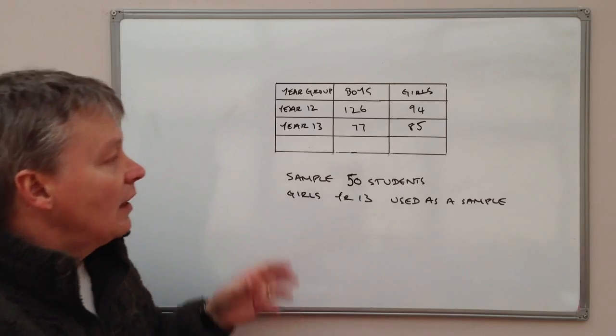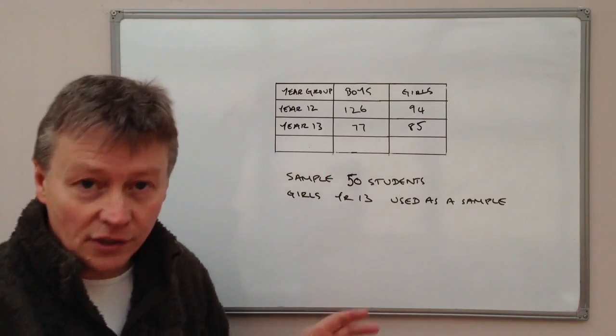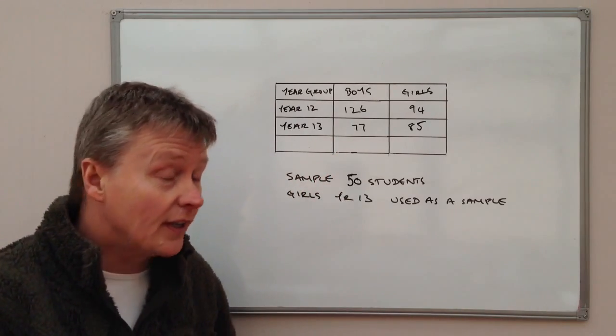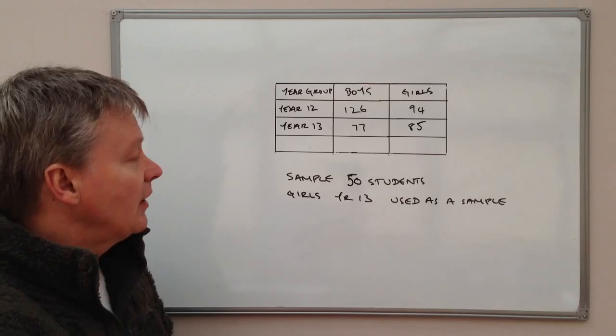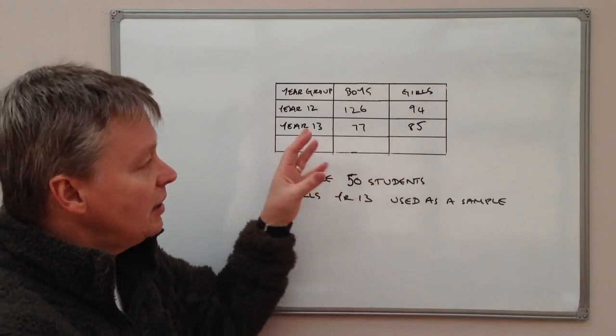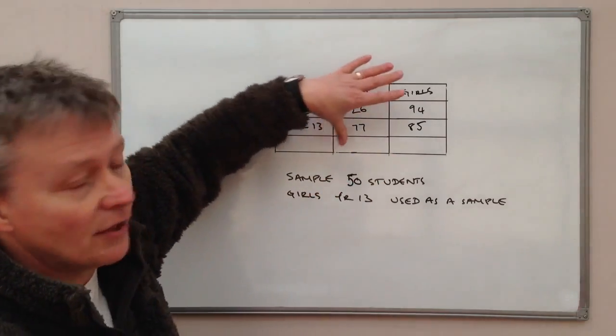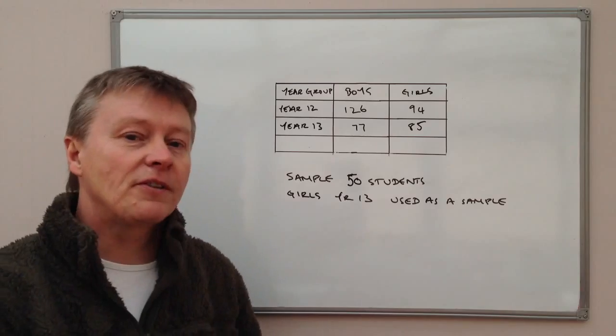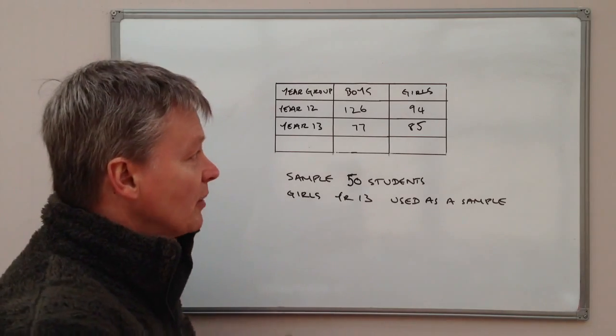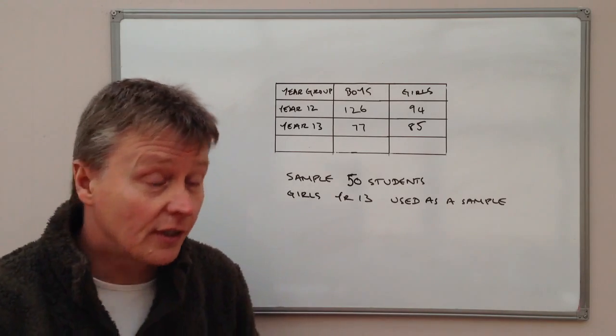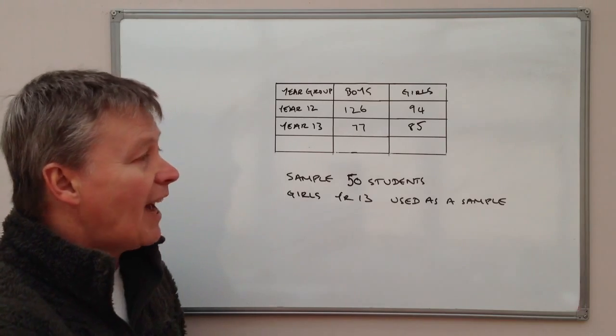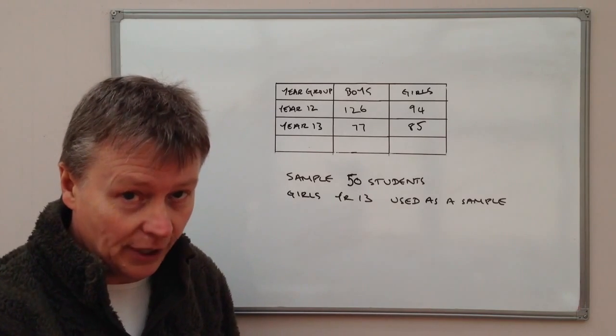So these kind of questions are usually given to you in a couple of different ways. Generally speaking, they're given to you as a graph or a chart or something like that. Now sometimes there's bits of information missing, and in order to gain full marks on these questions, you need to be able to add the missing bits of information.